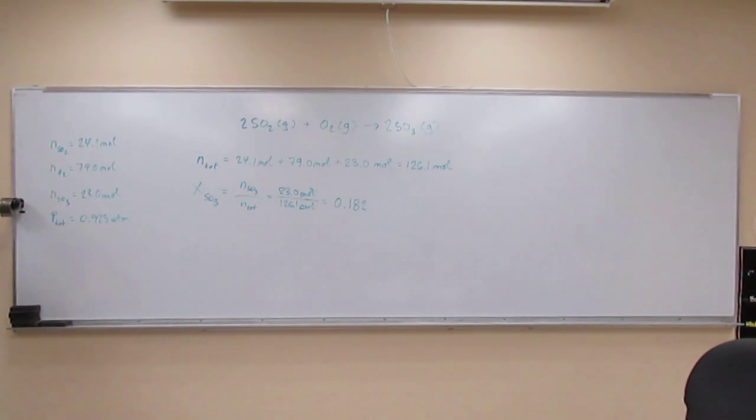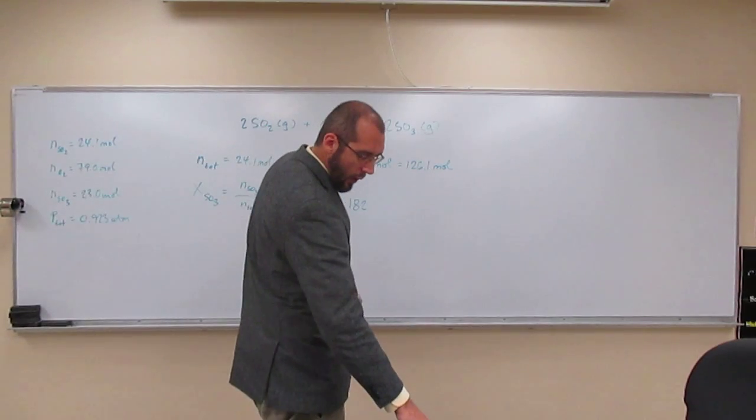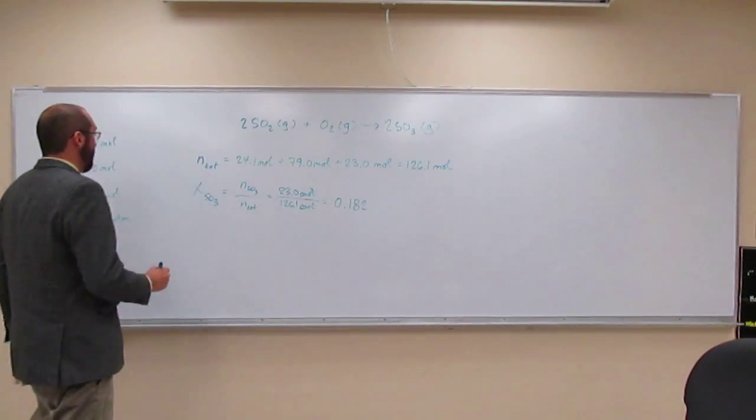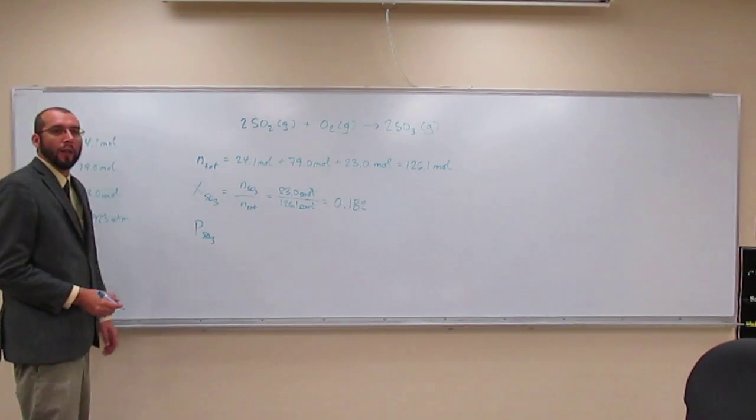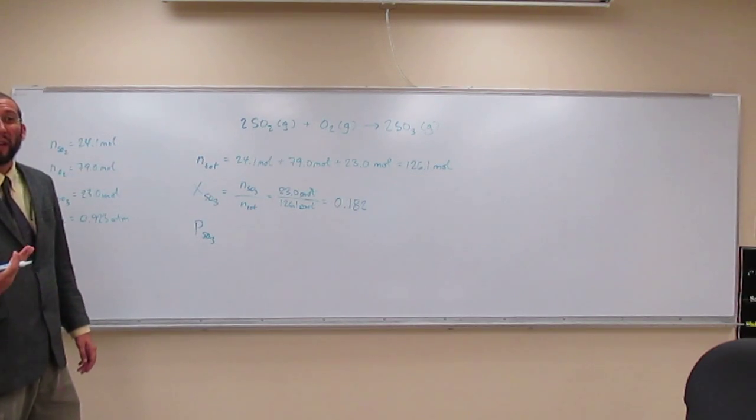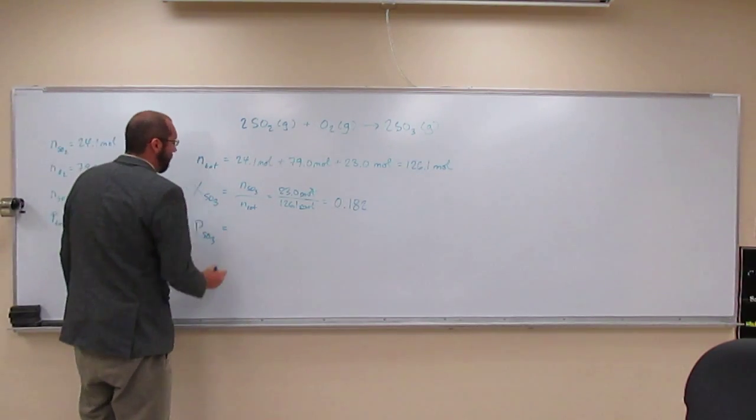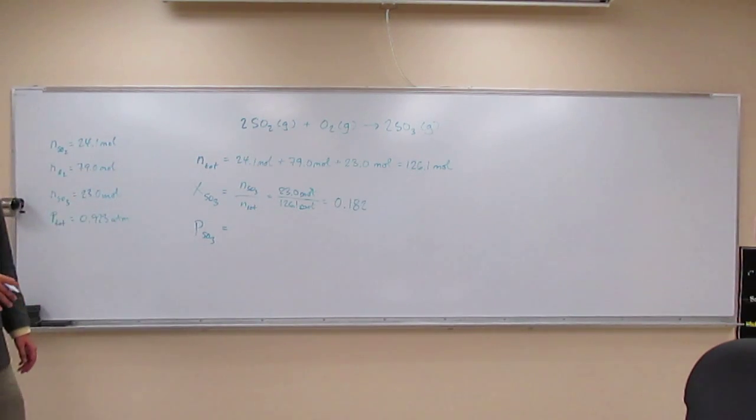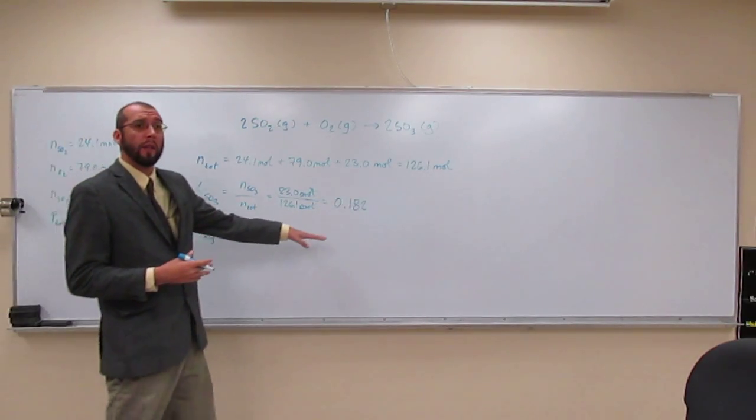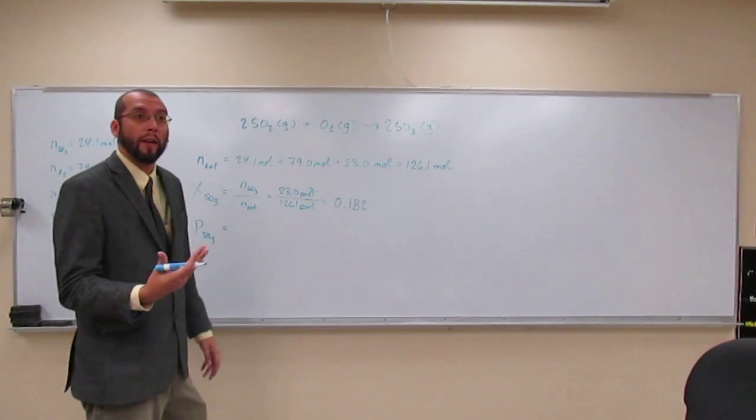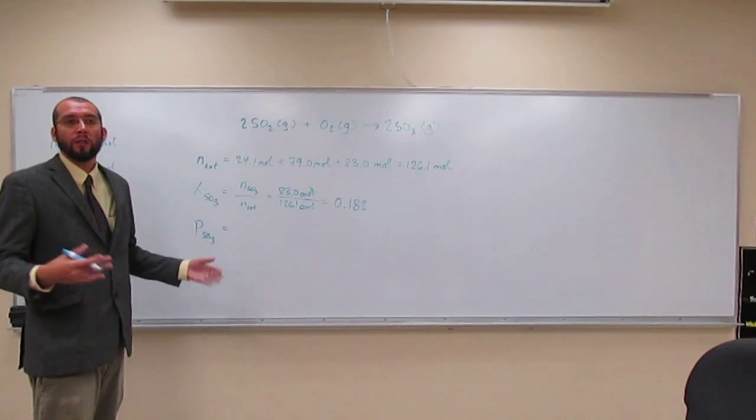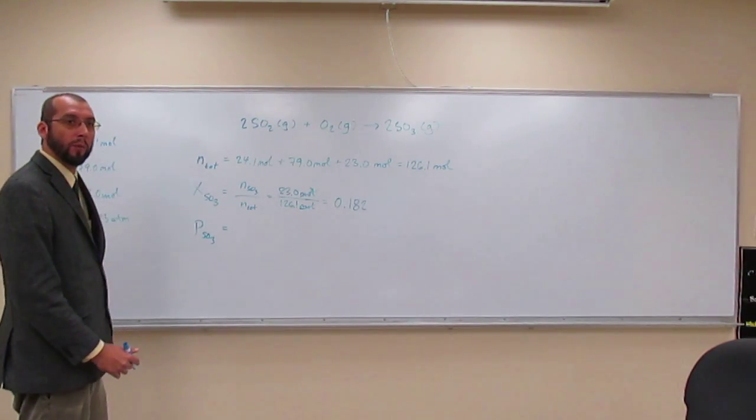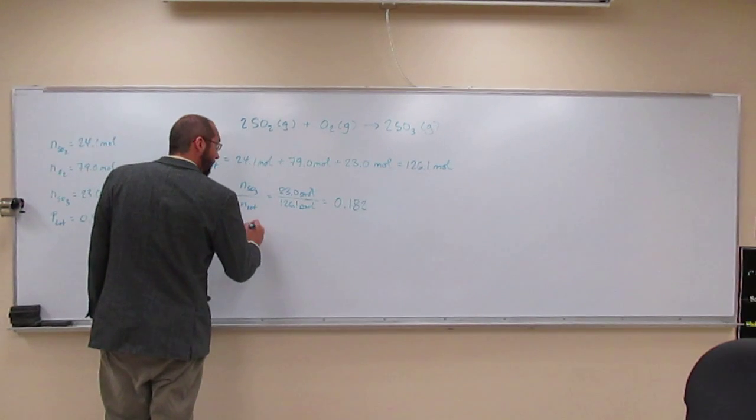Then it asks for the pressure of the sulfur trioxide at this point in time. This one sounds scarier than it actually is. The partial pressures of these gases are correlated with the number of moles, and the mole fraction helps you with that. If you know the total pressure and the mole fraction, you just multiply those together to get the partial pressure.